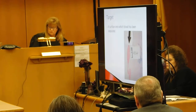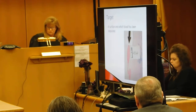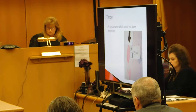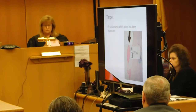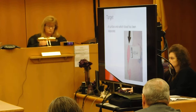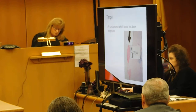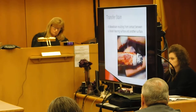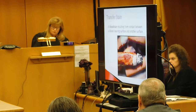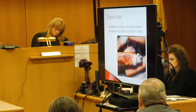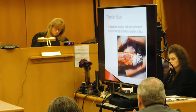Slide seventeen: a target can be something fixed or moveable — it's anything that blood is deposited on. It can be clothing, floors, walls, ceilings, etc. Slide eighteen: a transfer stain is an impression when there's blood on an item of evidence and it comes in contact with a surface, leaving a transfer on that surface.